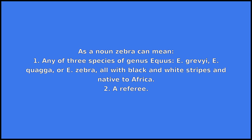As a noun, zebra can mean: 1. Any of three species of genus Equus — E. grevyi, E. quagga, or E. zebra — all with black and white stripes and native to Africa.